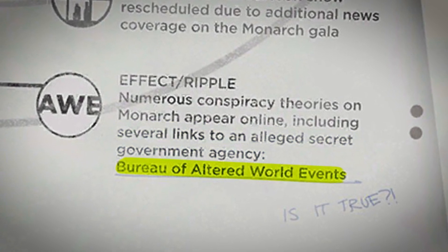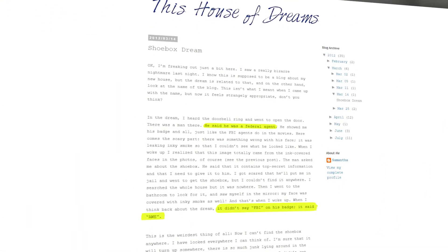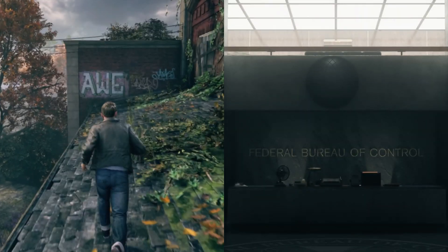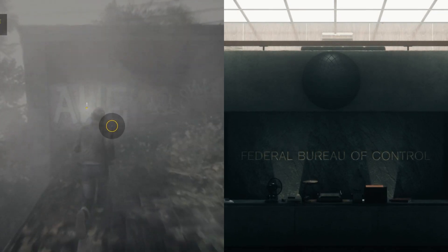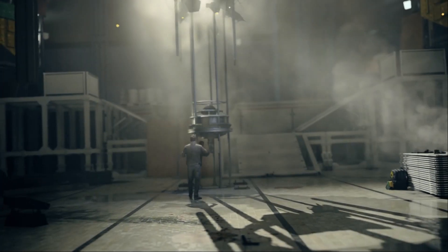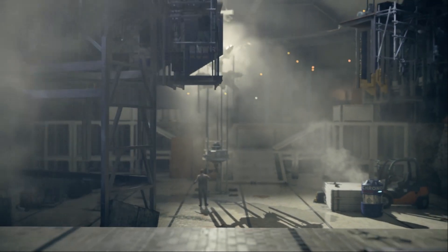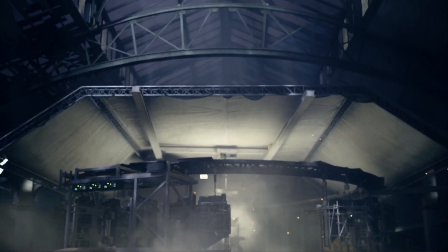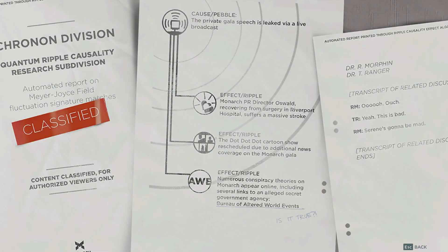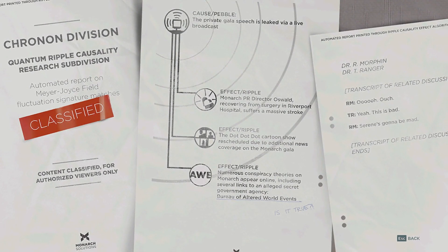For those unaware, Remedy initially used this name when referring to the FBC. These references go as far back as the 'This House of Dreams' blog in 2012. Some time between the release of Quantum Break and when Control was released, Remedy changed the name to the Federal Bureau of Control. Due to the current issues with IP ownership, Quantum Break is not officially part of the Control and Alan Wake universe, so making a definitive connection between Monarch and the FBC cannot be done. However, at this point in time, Remedy intended there to be an alleged link, even if that plot thread has been dropped. At some point in the future, this may be revisited.